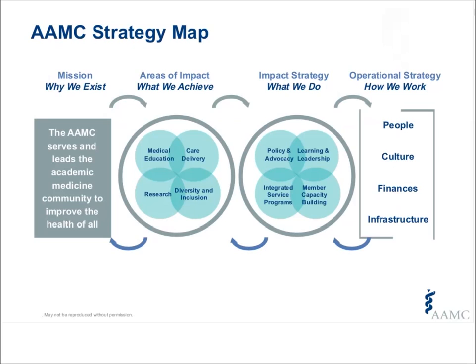So this slide is the AAMC strategy map. What I'd like you to focus on is how the mission areas of impact, impact strategy, and operational strategies relate to each other. The AAMC serves and leads the academic medicine community to improve the health of all. The areas we hope to impact are medical education, care delivery, research, diversity, and inclusion. Students in particular are focused in learning and leadership, integrated service programs, and policy and advocacy. Member capacity building is also a strategy that the AAMC uses.